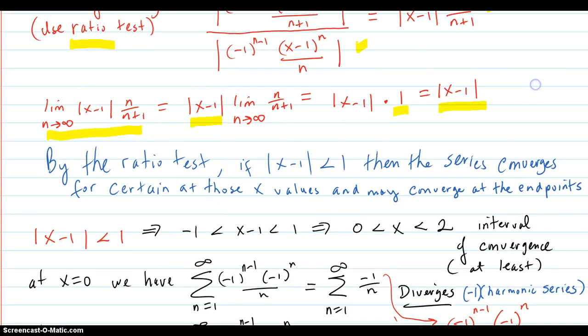By the ratio test, if that quantity is less than 1, then this series converges for certain at those x values for which that is true. But it also may converge at one or both of the endpoints, so we'll have to check that out.